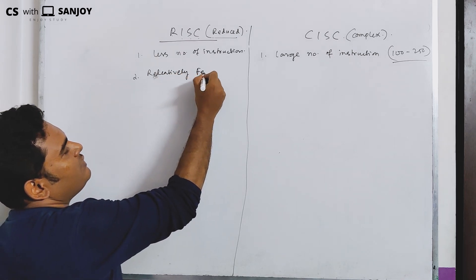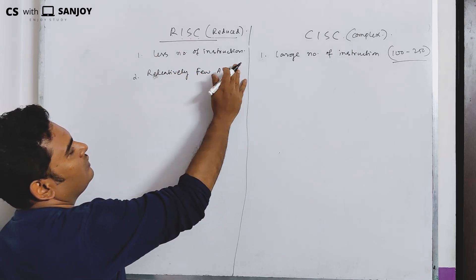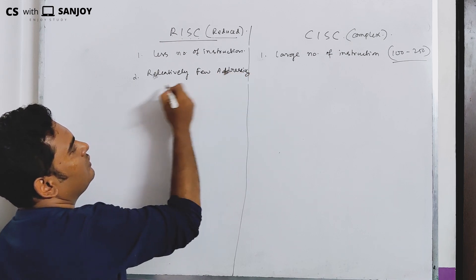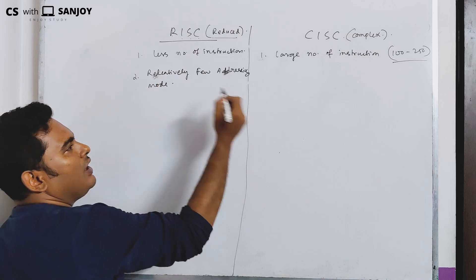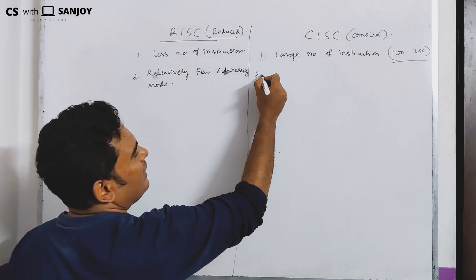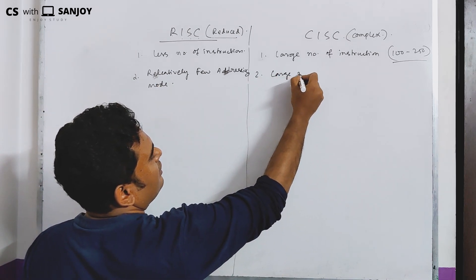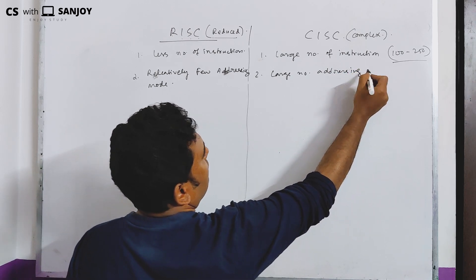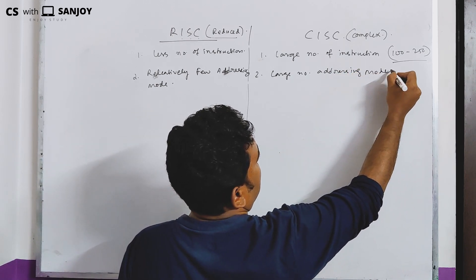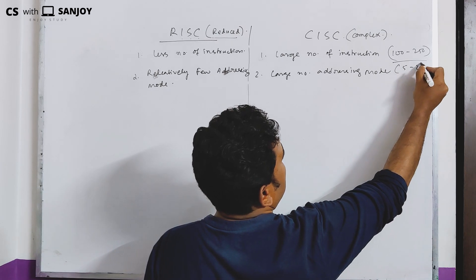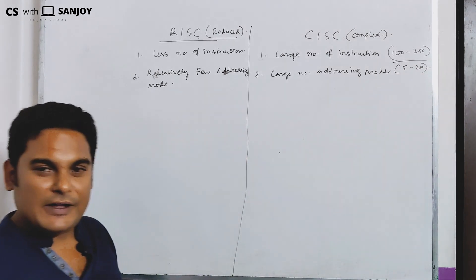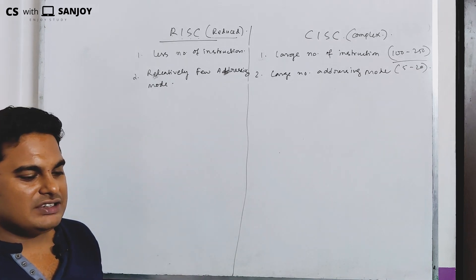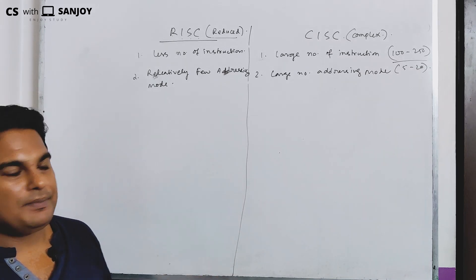There are few addressing modes in RISC, whereas CISC has a large number of addressing modes — nearly about 5 to 20 addressing modes. Now let me tell you only the basics of addressing modes.